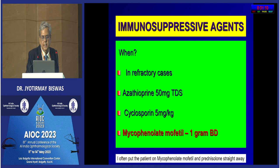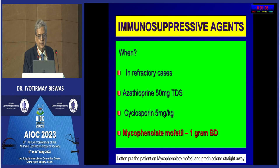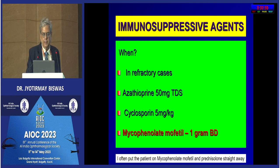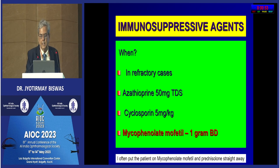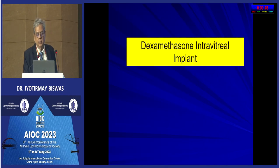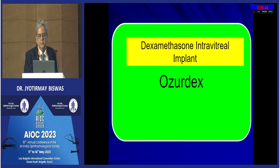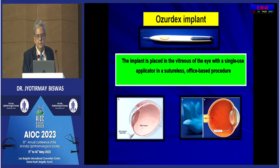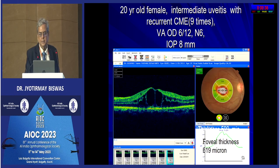Because it is a long-run disease process, I prefer to put patients on immunosuppressive agents. I often put patients on mycophenolate mofetil 1 gram twice daily with prednisolone and taper gradually. Some patients may require low-dose prednisolone for a long time. Dexamethasone intravitreal implant is quite good for recalcitrant intermediate uveitis; it is a single-use application which is an office-based procedure.